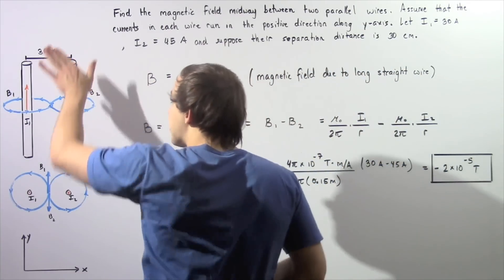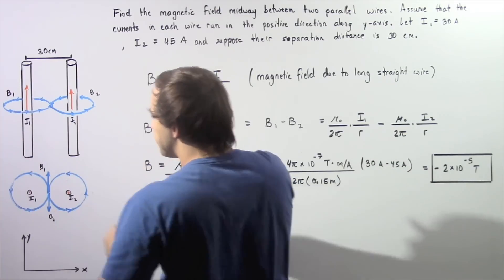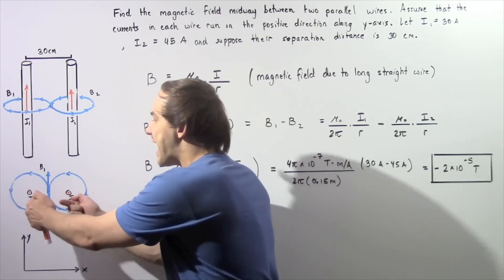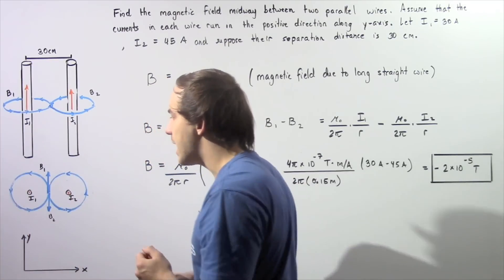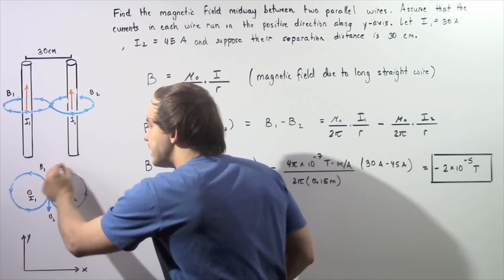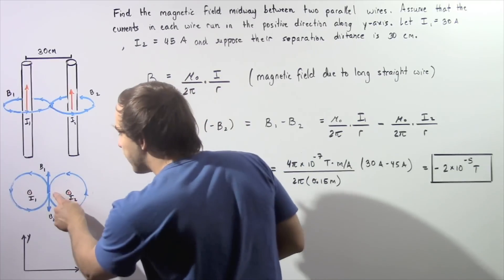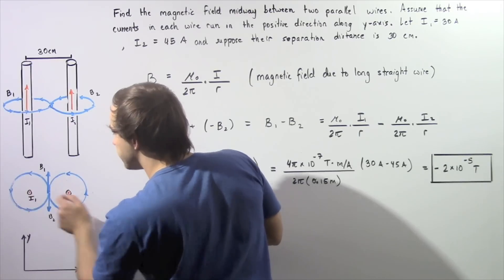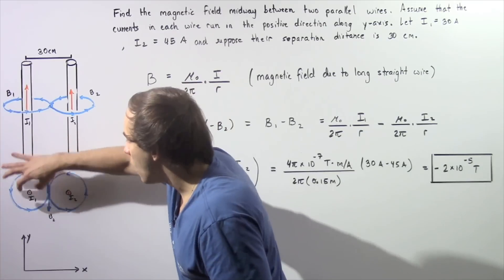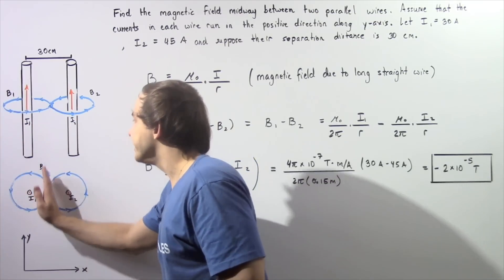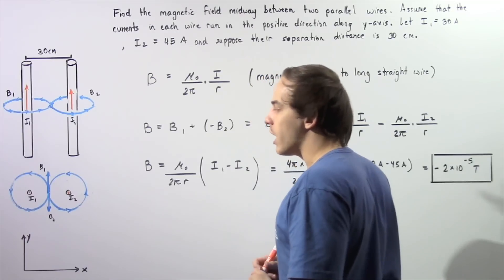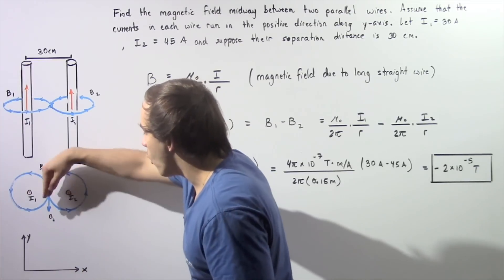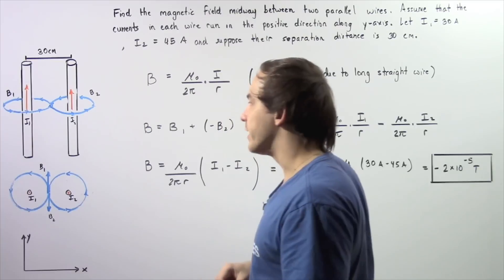Examining the top-to-bottom view of the diagram, we see that currents I1 and I2 both point out of the board, shown by dots. Both magnetic fields run in the same counterclockwise direction. At the midpoint 15 cm from either wire, B1 points in the positive y-axis direction, while B2 points in the negative y-axis direction — that is, B2 points downward and B1 points upward.